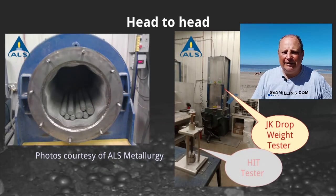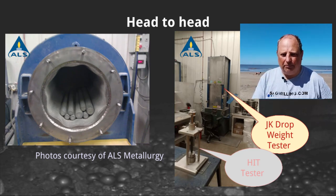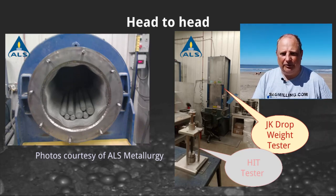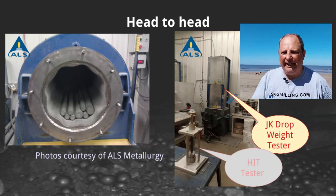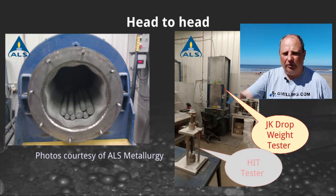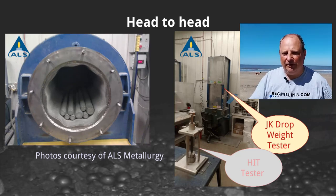The apparatus used in these tests: on the left side is a Bond rod mill apparatus — thanks to ALS Metallurgy in Kamloops for these photos. You can see it has a wave liner on the inside. On the right-hand side you can see the JK drop weight test rig, which is the big blue machine up against the wall in the background. That's the apparatus used when running the SMC test.